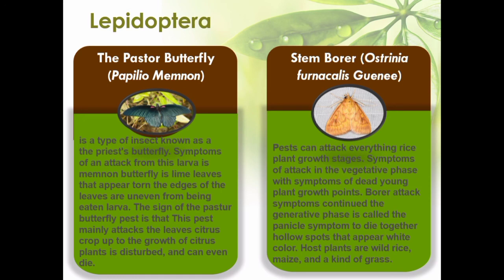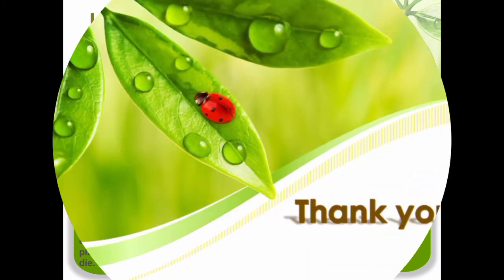The stem borer, Ostrinia furnacalis, can attack all rice plant growth stages. Vegetative symptoms include dead young plant growth points, while generative symptoms are called the die-together condition. Host plants include wild rice, maize, and types of grass.